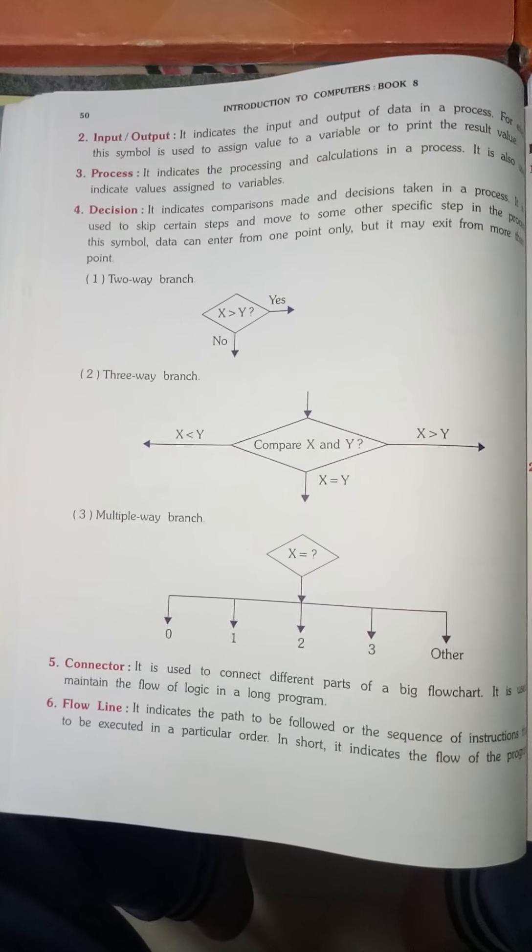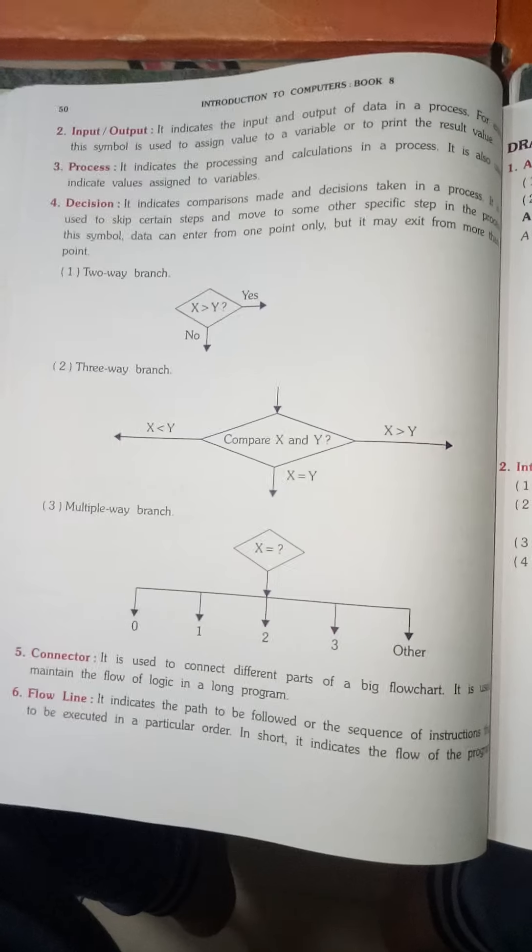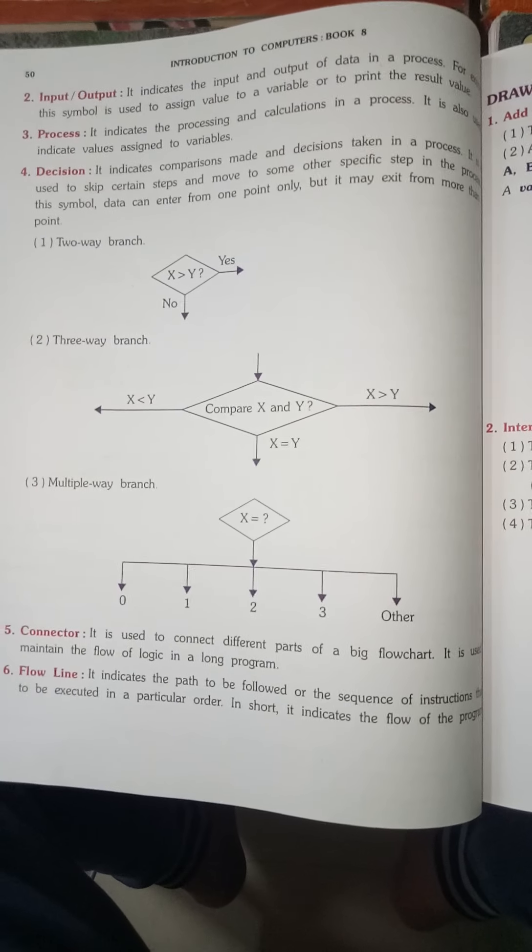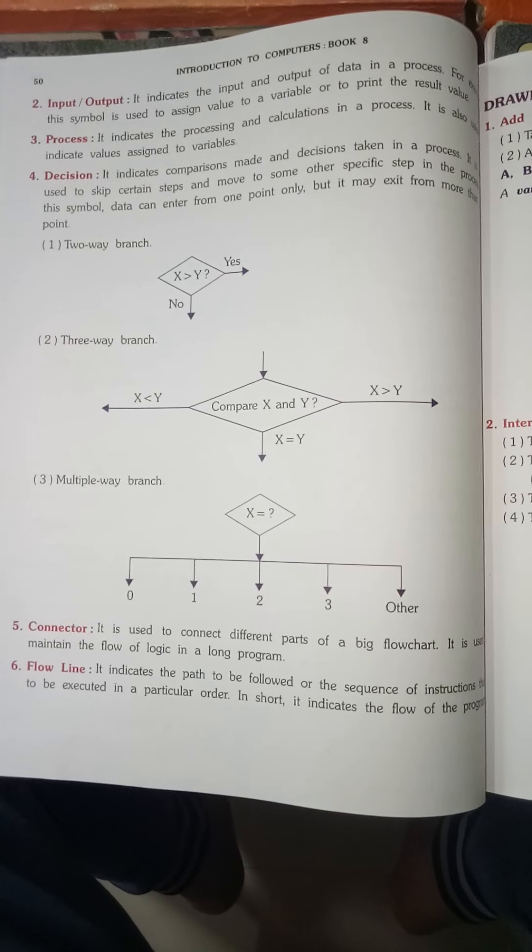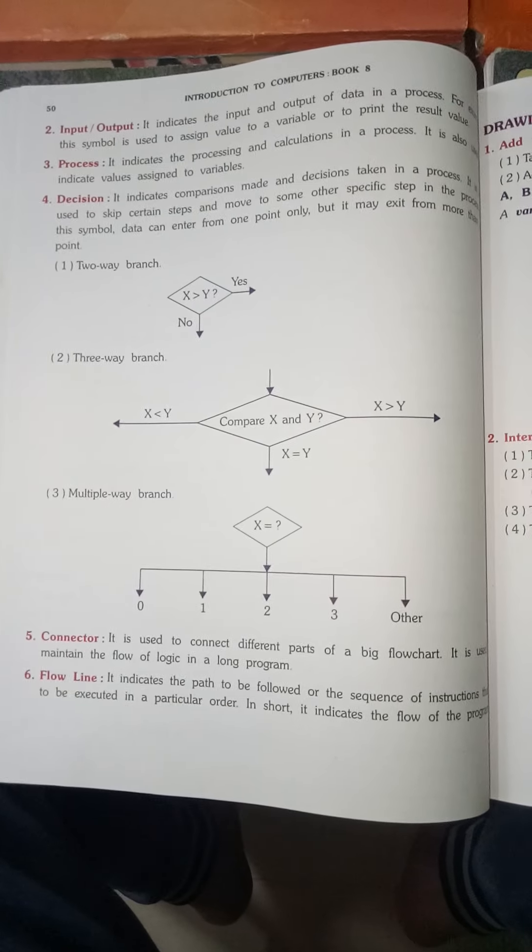Flow Line: It indicates the path to be followed or the sequence of instructions to be executed in a particular order. In short, it is used to show the path.